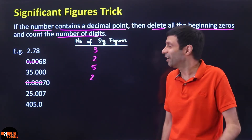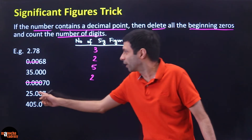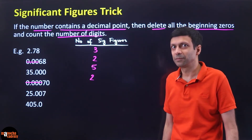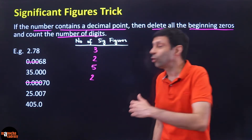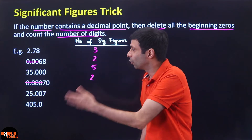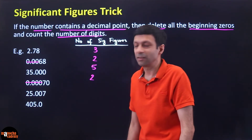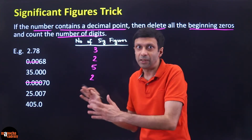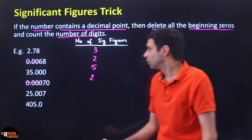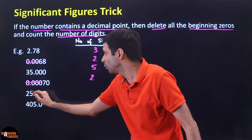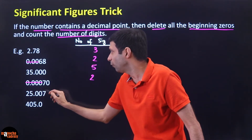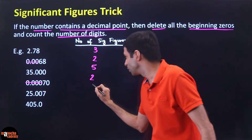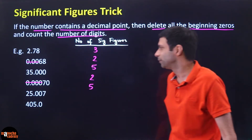What about 25.007? Delete all beginning zeros — but there are no zeros in the beginning. Don't delete the zeros in the middle. So the number of significant figures is 1, 2, 3, 4, 5 — five significant figures. So simple.